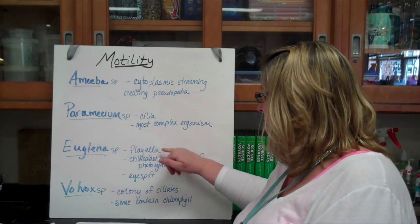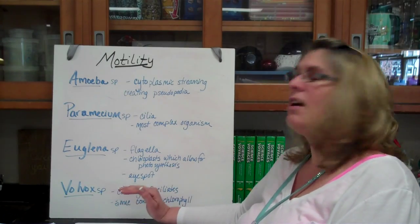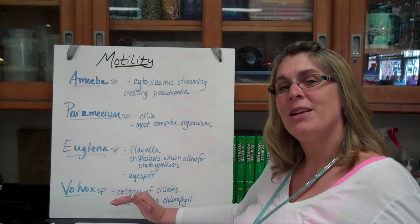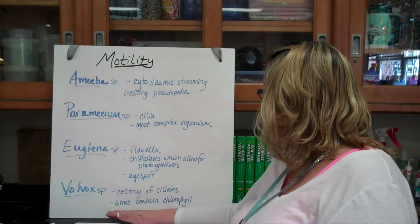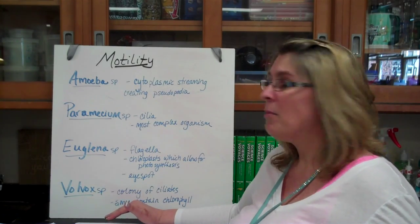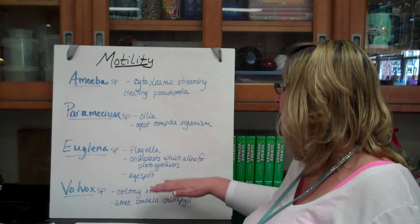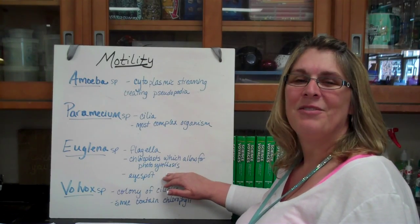And it gets around, like I said, with flagella. Volvox is a colony of ciliates. That means organisms of cilia. Some of them could contain chlorophyll. Some of them probably do. So if they have chlorophyll, they also can undergo photosynthesis.